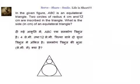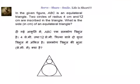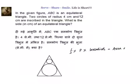Let's move to the next problem. In the given figure, ABC is an equilateral triangle. Two circles of radii 4 and 12 are inscribed in the triangle. What is the side of the equilateral triangle? We have a direct formula for this. Whenever we have an incircle — one that touches all three sides — we have: half into perimeter of the triangle into inradius, which is equal to 12 in this case, equals the area of the triangle.